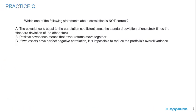Quick practice question to check our understanding: Which of the following statements about correlation is NOT correct? A: The covariance is equal to the correlation coefficient times the standard deviation of one stock times the standard deviation of the other stock. B: Positive covariance means that the asset returns move together. Or C: If two assets have perfect negative correlation, it is impossible to reduce the portfolio's overall variance.